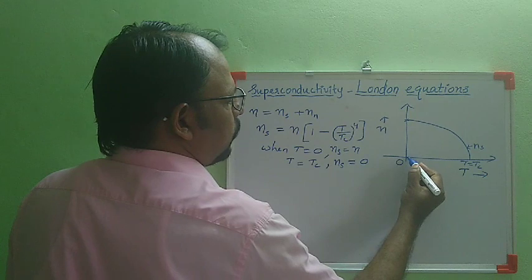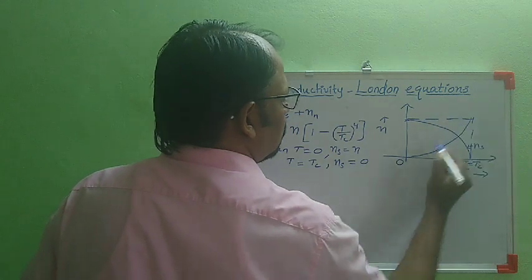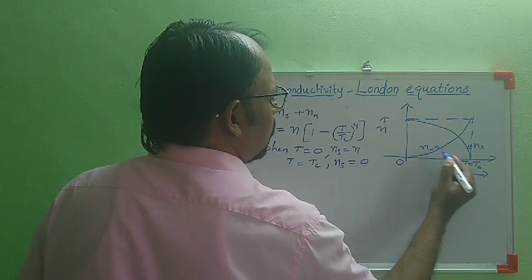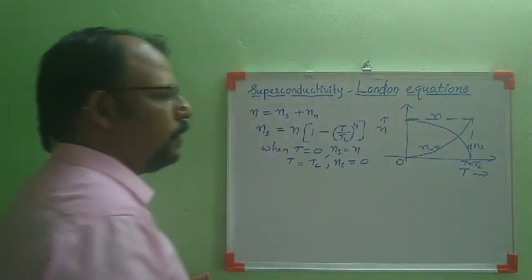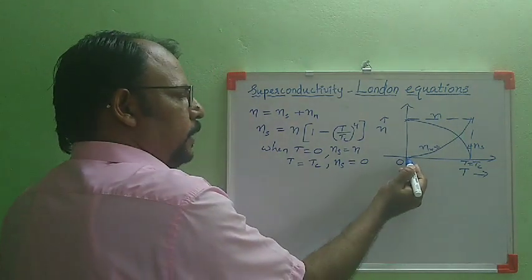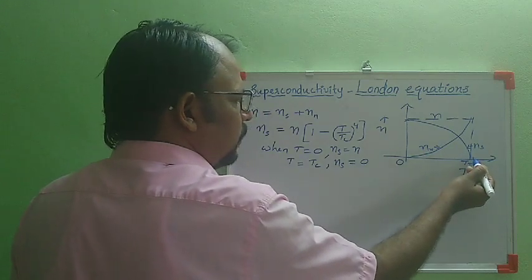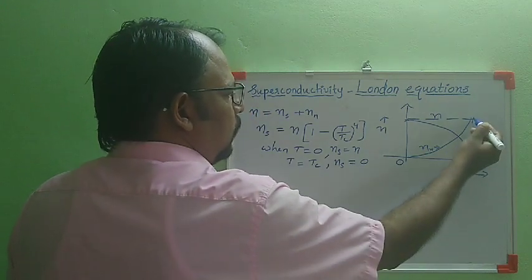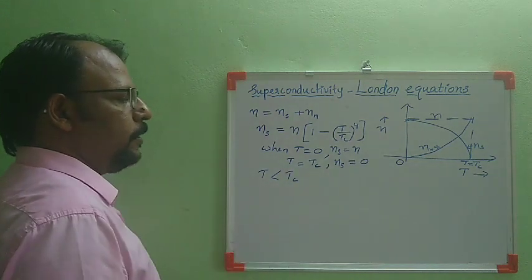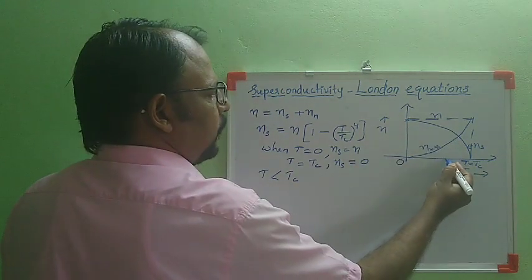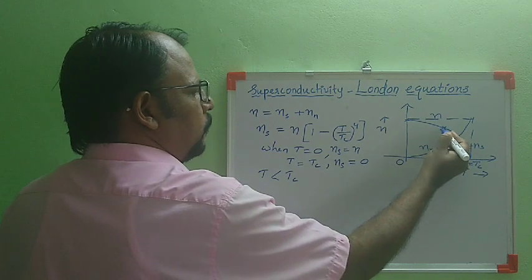When we draw the variation of normal electrons with temperature, this curve represents the number density of normal electrons, and the other represents the number density of super electrons. The total number of electrons is constant. At zero Kelvin, the number density of normal electrons is zero and all electrons are super electrons. At T = Tc, all electrons are normal electrons and the number density of super electrons is zero. At a temperature below Tc, the material has both super electrons and normal electrons.